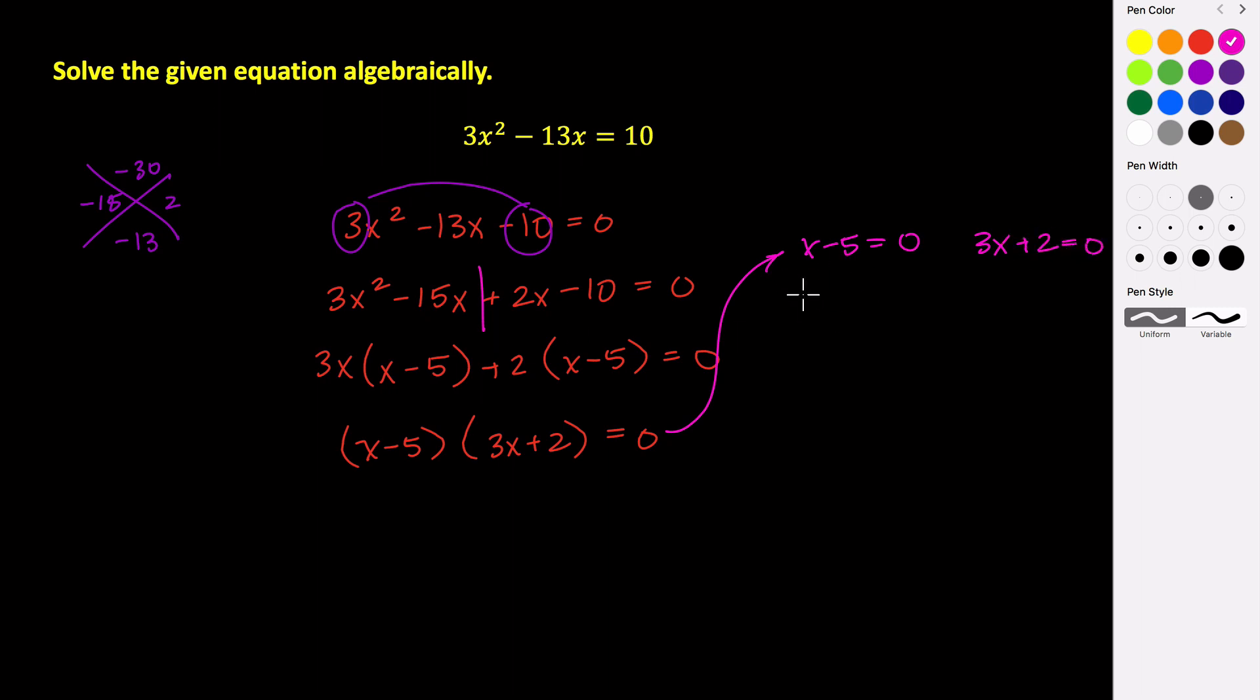So x minus 5 equals 0, so that just means that x is 5. And 3x plus 2 equals 0, that means that x is negative 2 thirds. So those are the two solutions to this equation.